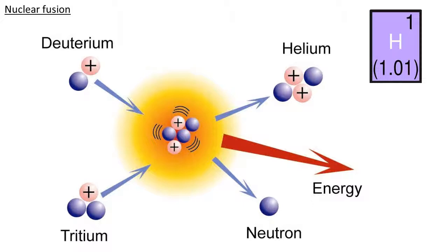You might expect the helium and the neutron to weigh the same as the deuterium and the tritium, but they don't. Although you have the same number of subatomic particles — the same number of protons and neutrons on each side — there is a mass difference. It weighs slightly less. What's happened is some of this mass has been converted into energy, and that's a good thing for us because that's the energy in the form of light and heat that helps our planet support life. So our sun is actually getting lighter and lighter as it burns its fuel up.